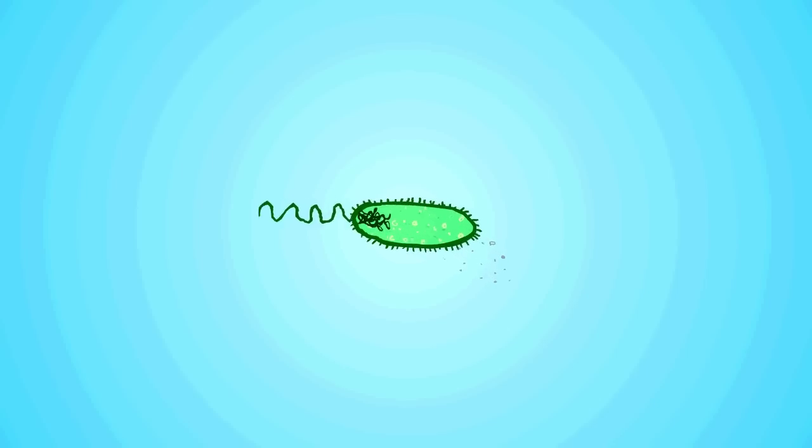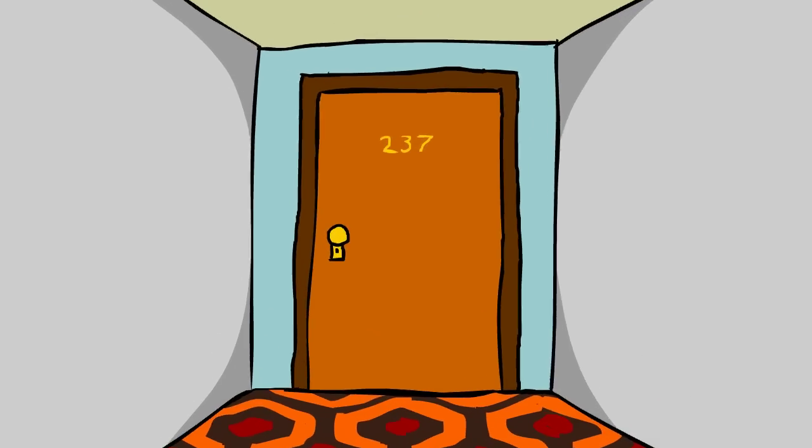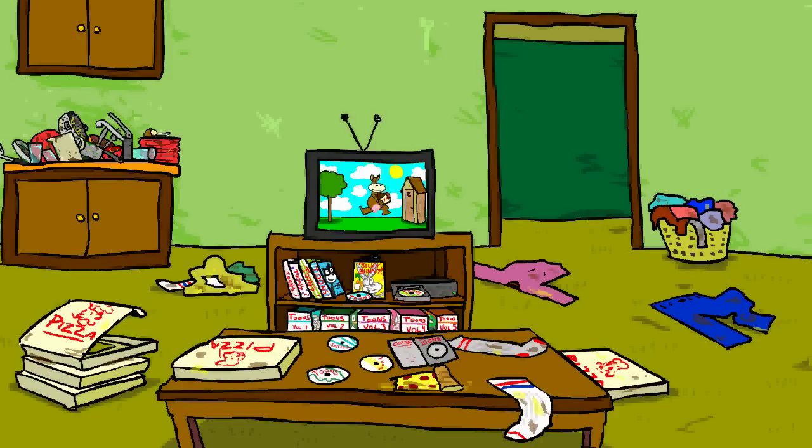When a cell goes about its business, it leaves a lot of stuff behind. It's like looking in someone's apartment and coming up with a story of their recent lives. Looking at this guy's apartment, we see he's been eating a lot of pizza, not doing much laundry, ignoring his dishes, and watching a whole lot of cartoons. We can make educated guesses about his lifestyle based on what we see.